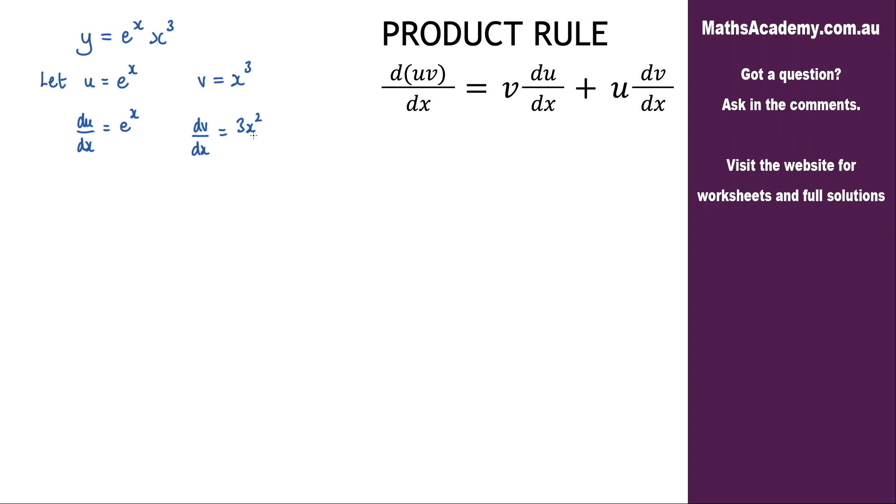We can now go ahead and apply the product rule. So dy by dx is going to be equal to v multiplied by du dx. So we're going to get e to the x times x cubed.